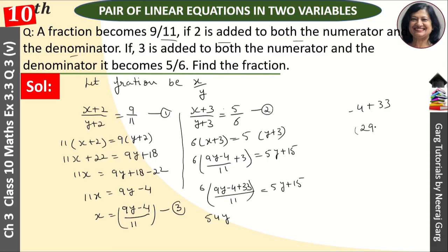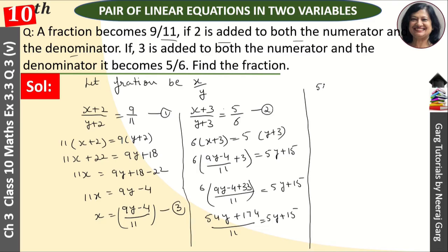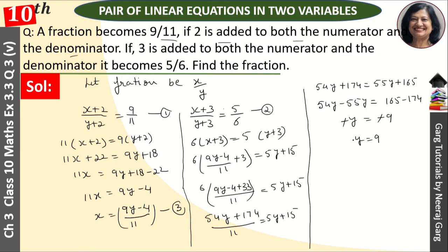इस 29 को 6 से multiply करना है: 6 × 9 = 54y, और 6 × 29 = 174. तो 54y + 174 upon 11 = 5y + 15. Solve करने पर 54y + 174 = 55y + 165. इसलिए 54y − 55y = 165 − 174, −y = −9, यानी y = 9.